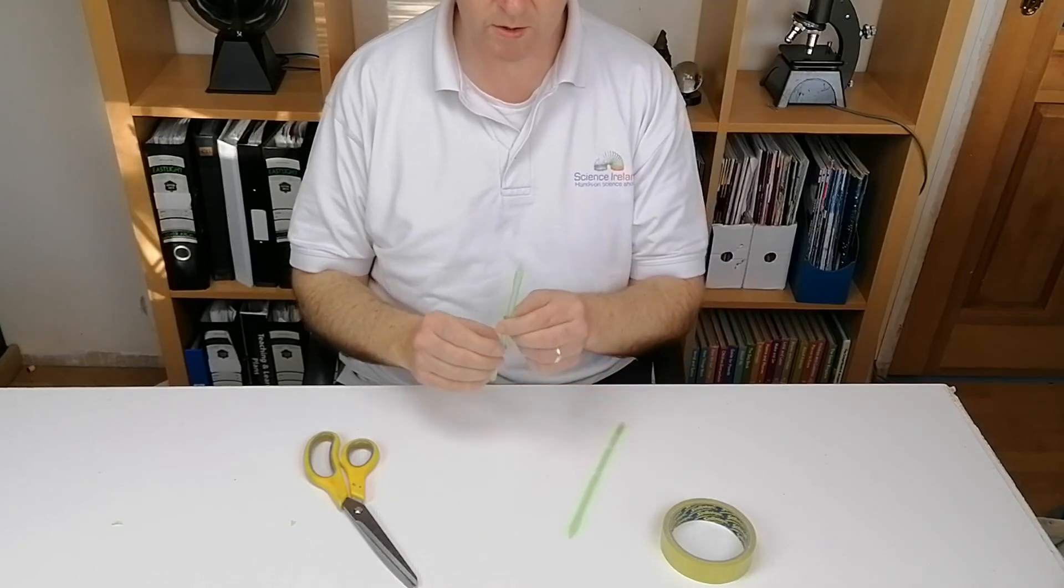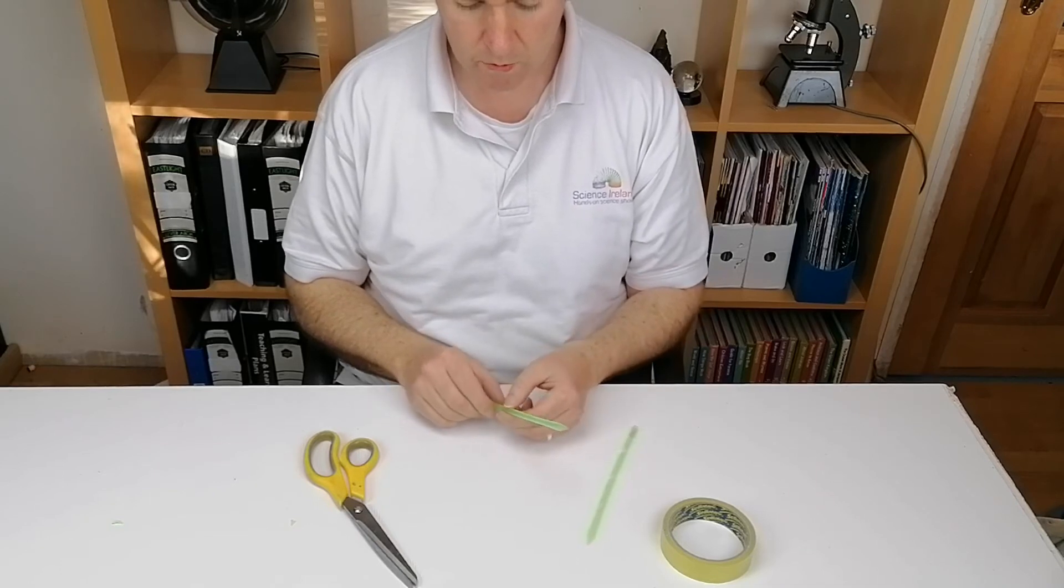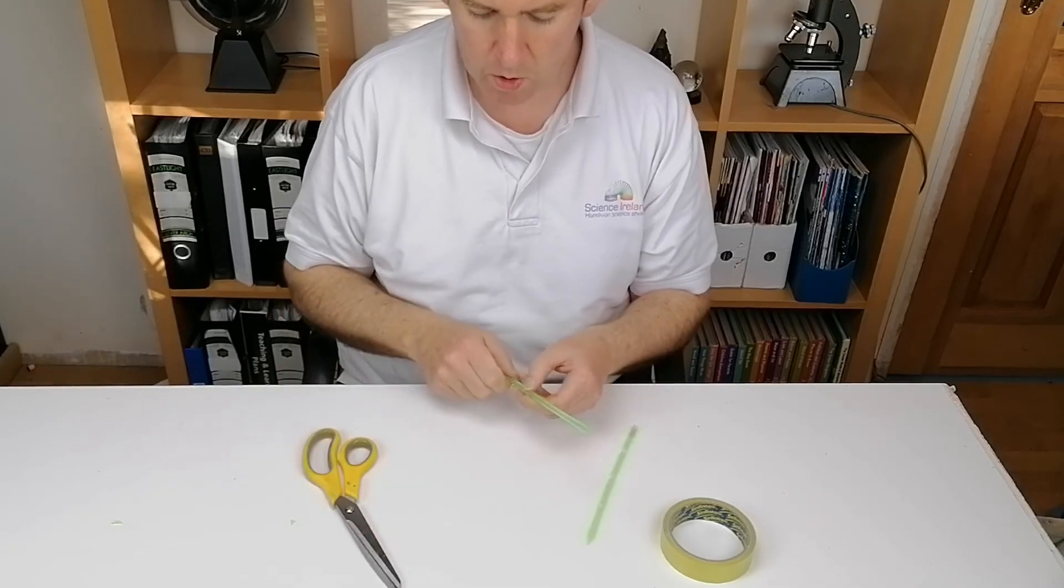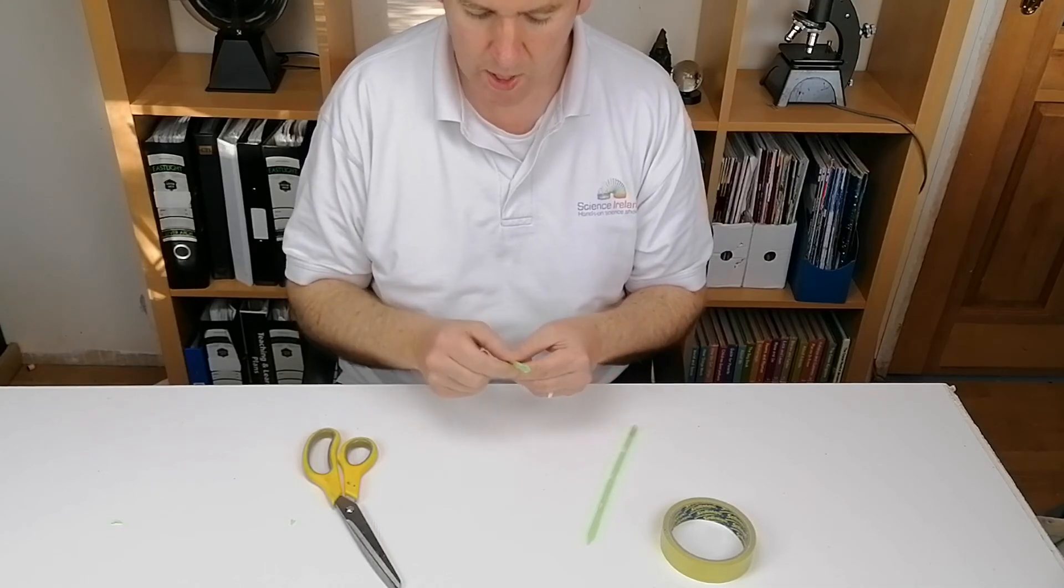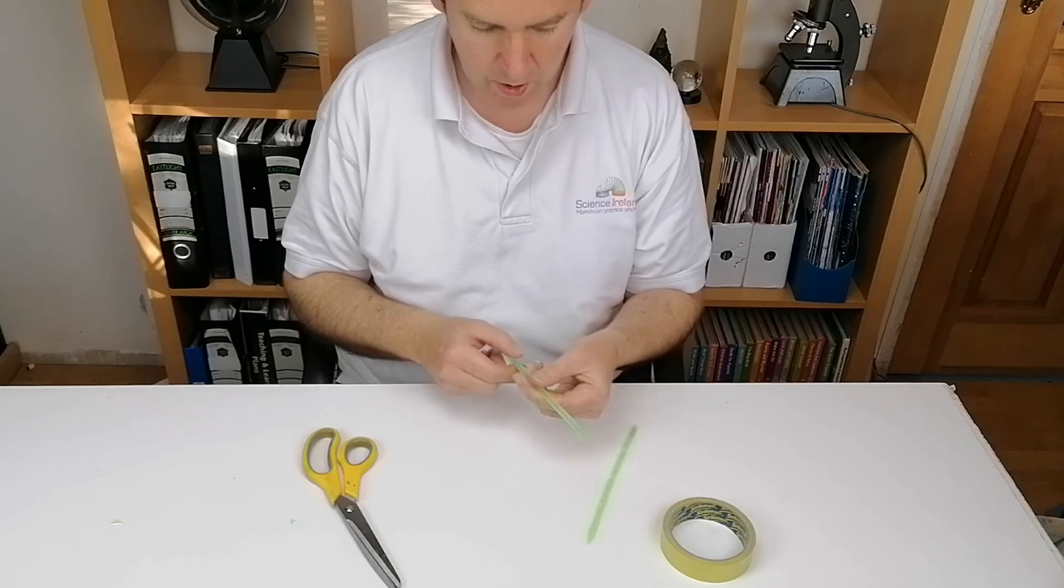Another variation you can do with the kazoo is once you've made the kazoo you can make holes in it. Now for this we're going to use scissors but if you had a punch for making holes in paper you could use that as well. And now you don't want to chop through the whole thing, you just want to chop through half it. So I'm going to make two holes in this and I'm just going to use scissors.